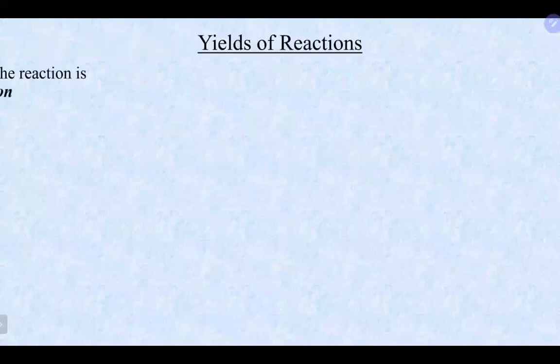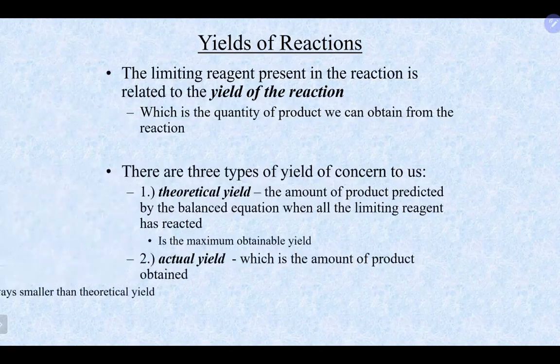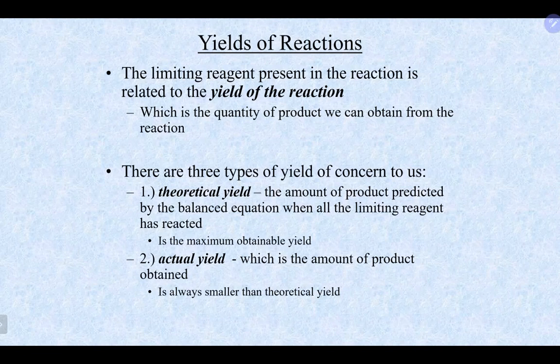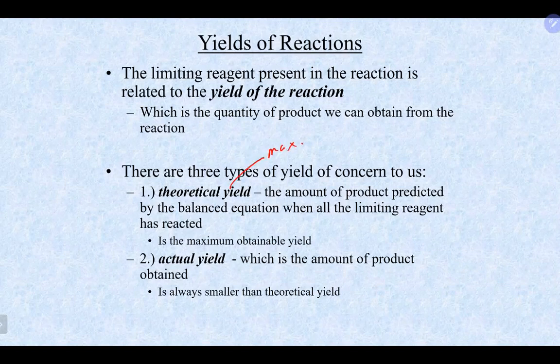Now let's officially talk about yields. There are really three different types of yields in a reaction. The first is the theoretical yield — whenever you do a calculation based on the limiting reagent to find how much product you'd make, that is your theoretical yield. It is really the maximum yield — if everything went perfectly, no side reactions, nothing dropped, that is exactly how much you should get.